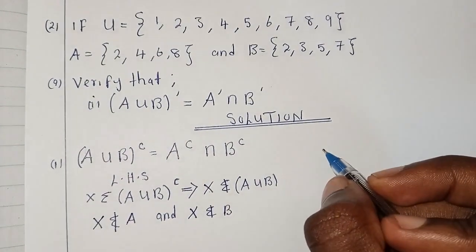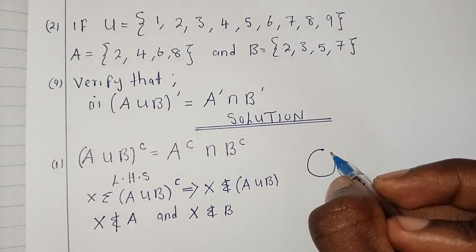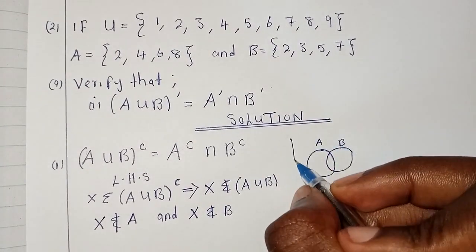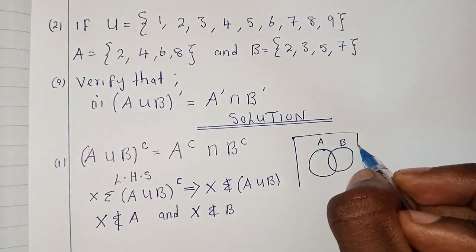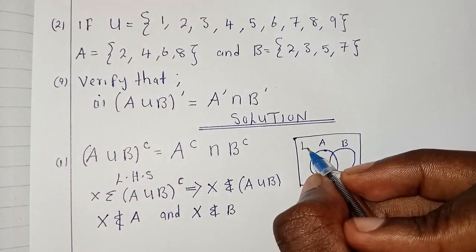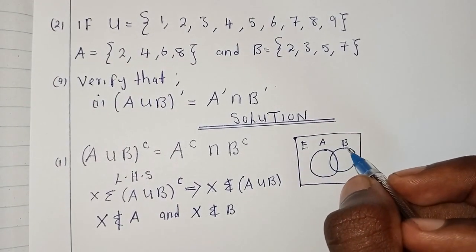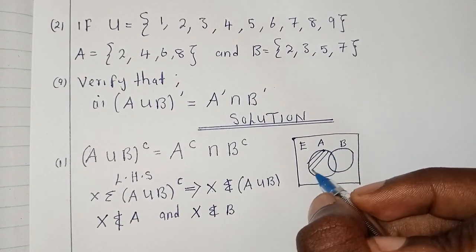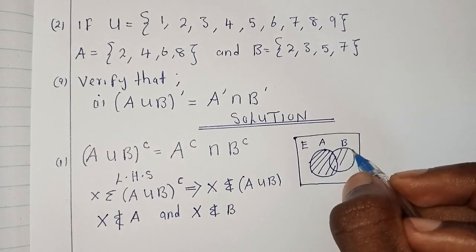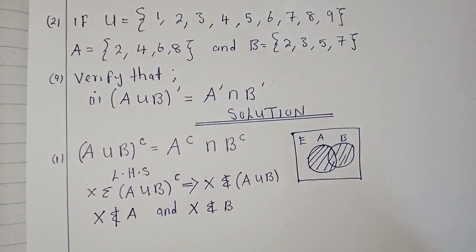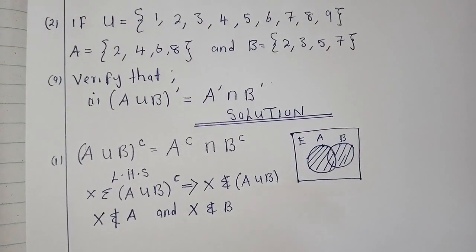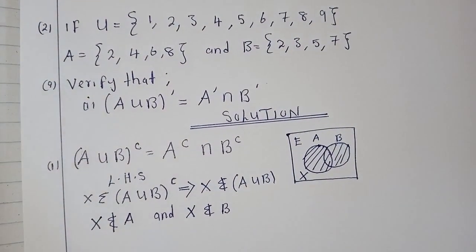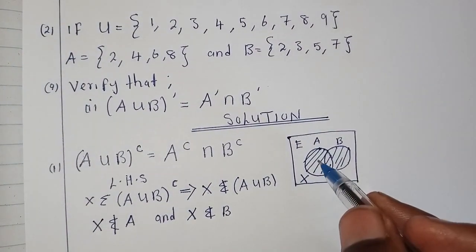If you have set A and set B, you get the intersection — set A intersection B is simply this region. Complement simply means outside, so what we are saying is that x is in that complement region: it is not a member of A and it is not a member of B.